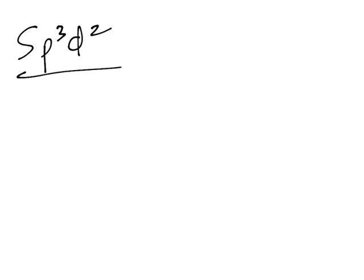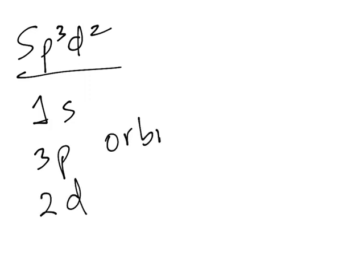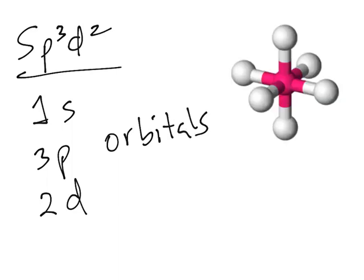Finally, let's move into sp3d2. It will be 1s, 3p, and 2d orbitals. The picture, as before, will look like this — so let's think of the usual four atoms, and then just add two more atoms, one line going straight up and one straight down. That structure has an electron geometry called octahedral.